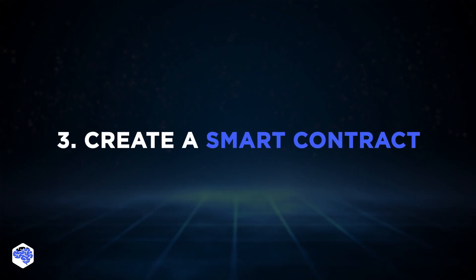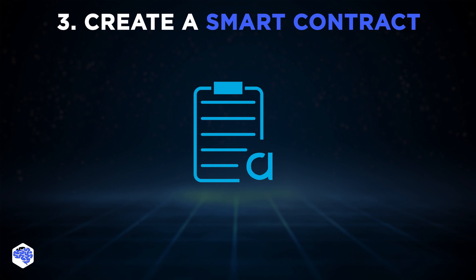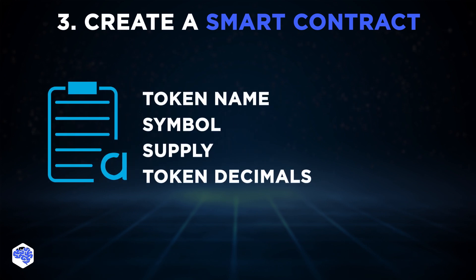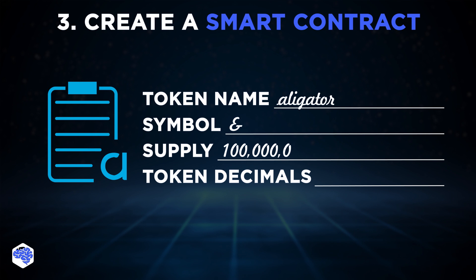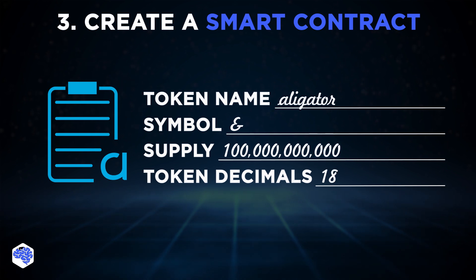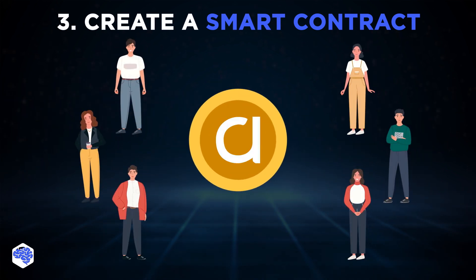Assuming you have chosen Ethereum, the next step is to create the smart contract and then deploy it to the test network. You will need to decide on the number of tokens, what it will be called, its symbol, and decimal places. Finally, after you've tested and validated your coin, it's ready to run.